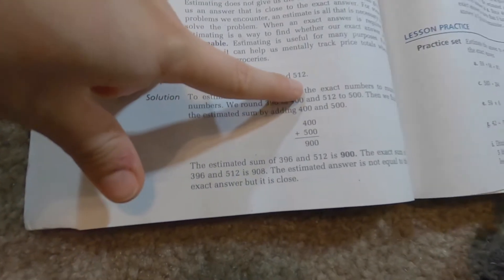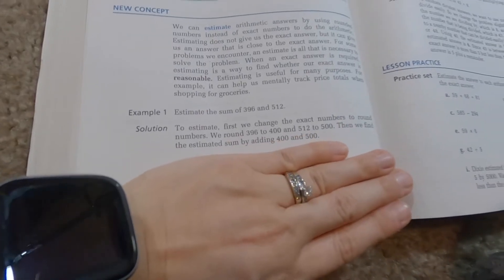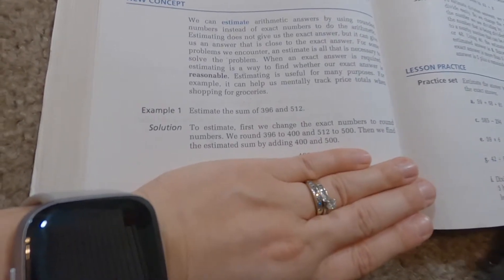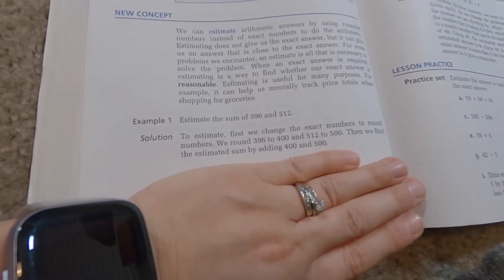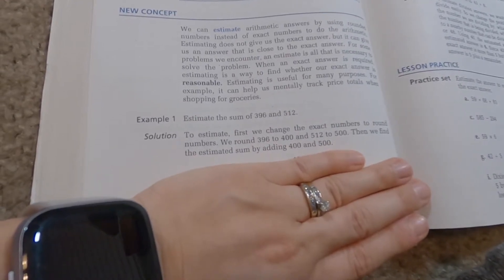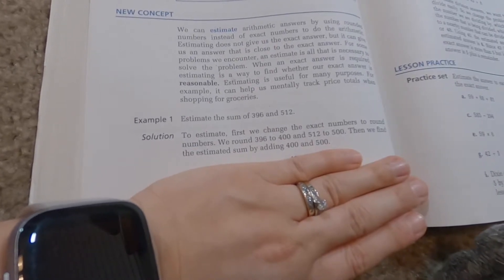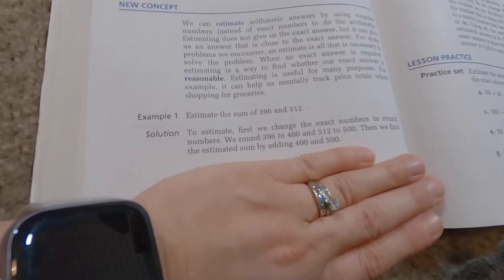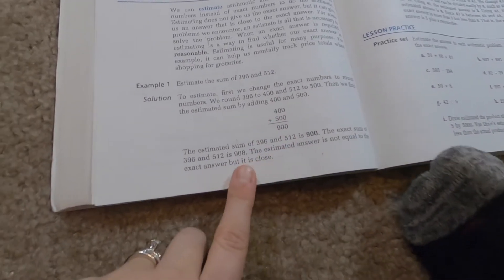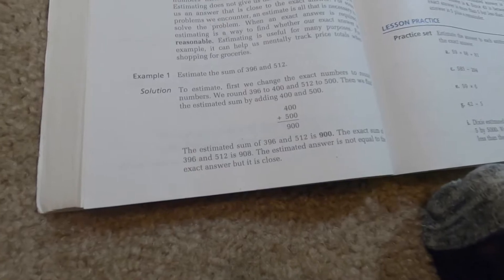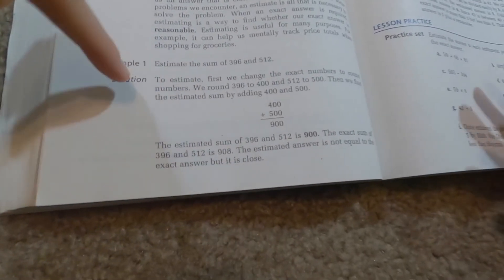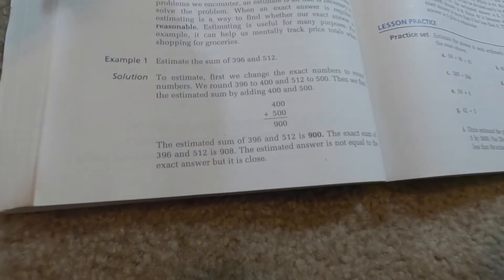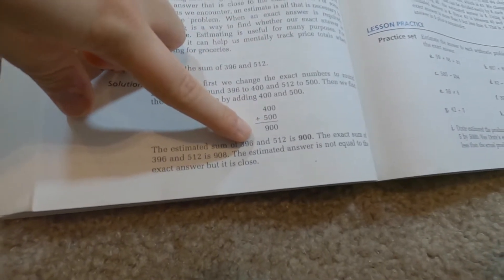So here, Isaiah, this one is asking us to estimate the sum of 396 and 512. So the solution says to estimate first, we're going to change the exact numbers to round numbers. What do you think we're going to round 396 to? 400. It's really close. And then 512, what do you think we should round 512 to? So if we were going to round 396 to 400, so we have 400 and 500, what would they be if we added them? 900. So it's saying here that the estimated sum of 396 and 512 is 900. Now the exact sum, so when I truly add them together, it's 908. So the estimated answer does not equal the exact answer, but it's pretty close, isn't it? So it was a little easier to do in our head to the 400 and 500, but it was still pretty close, wasn't it?